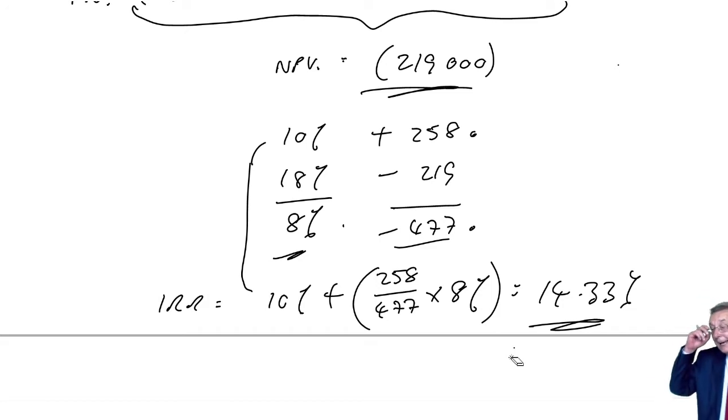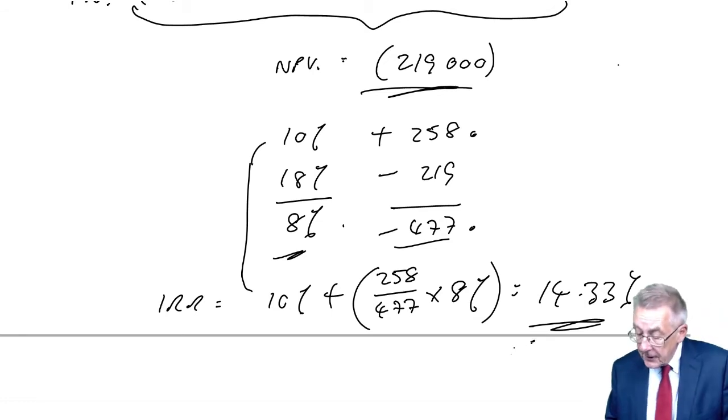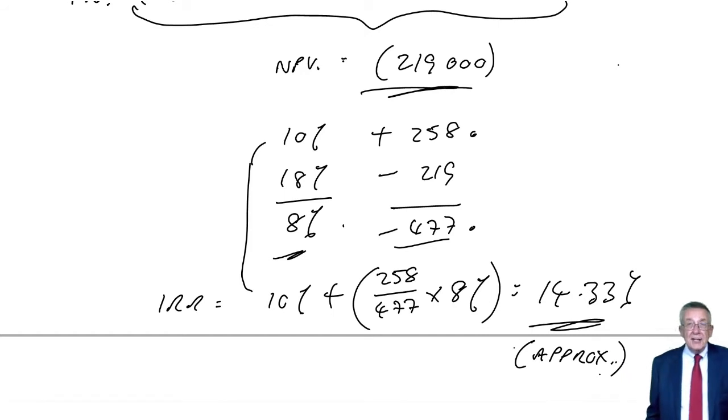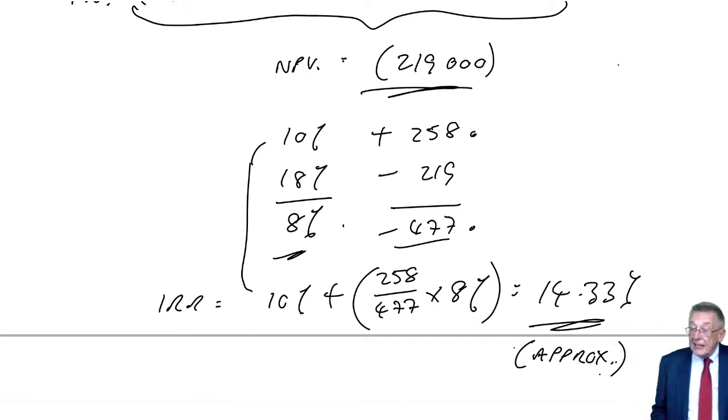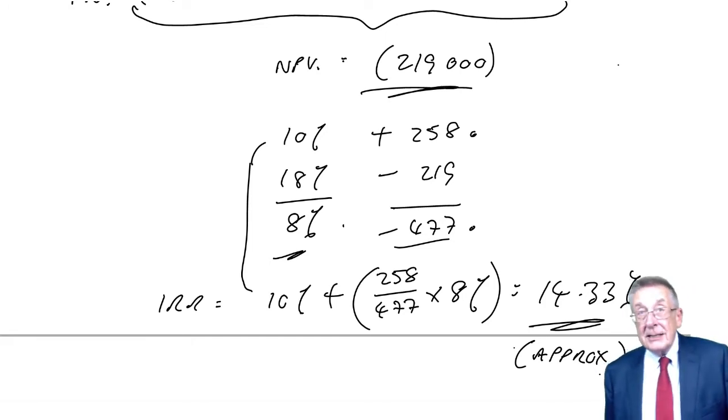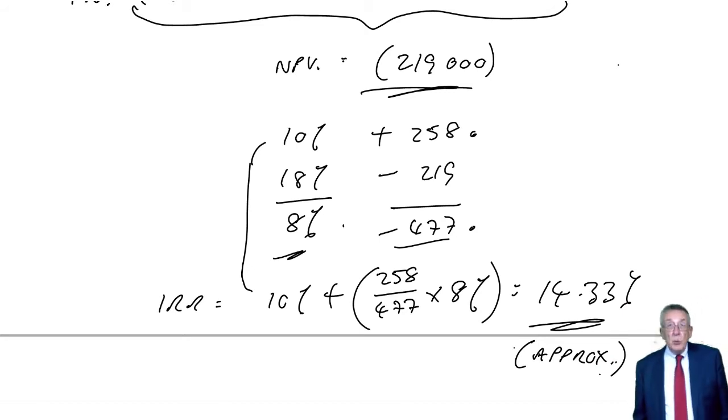Now I've already said in the earlier lecture, but I will repeat, that two things here. One is, this is only ever approximate. Because we are effectively assuming linearity. As the cost of capital increases, the net present value falls. We assume it falls linearly, which in practice it doesn't. It's a curve. So all we can really say is it's about 14%. And also, because of that, if you make different guesses, you will get a slightly different answer. And that's not a problem. It'll still be somewhere around 14%, otherwise you've made a mistake.